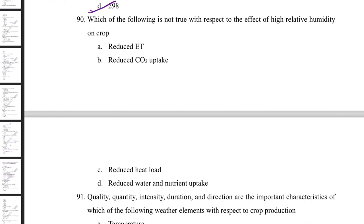Which is not true about the effect of high relative humidity on crops? Reduced evapotranspiration — correct, because high humidity lowers the transpiration pull. Reduction in CO₂ exchange — correct, since stomata close with less transpiration. Reduction in water and nutrient uptake — correct. 'Reduced heat load' is not true — high humidity reduces cooling by transpiration, so heat load increases rather than decreases.